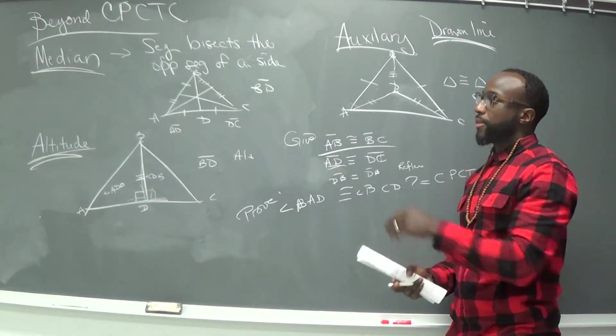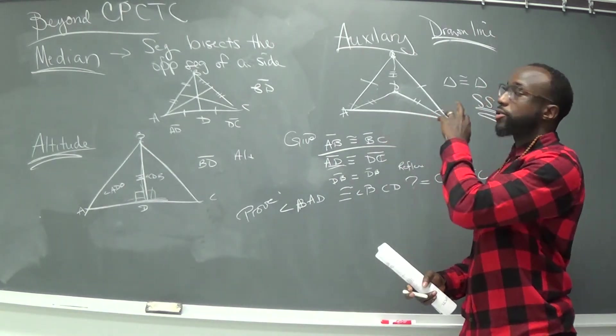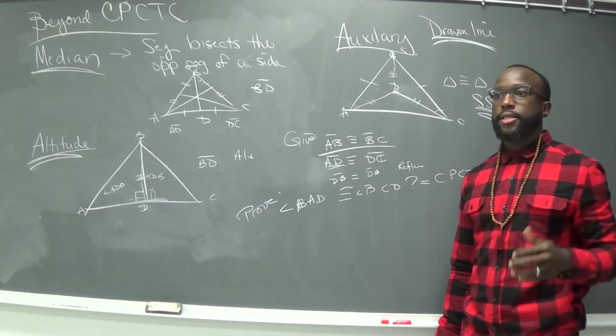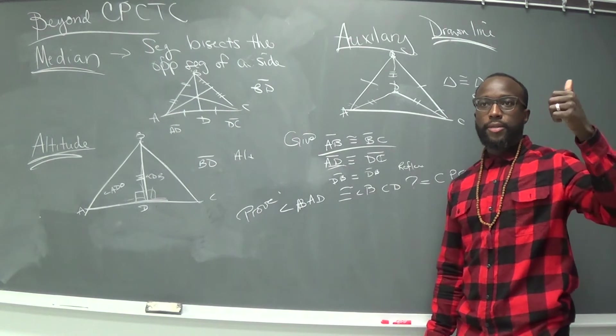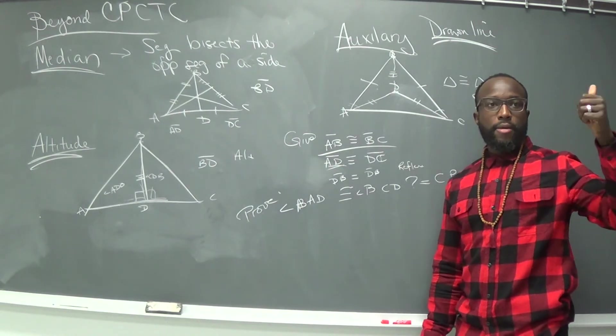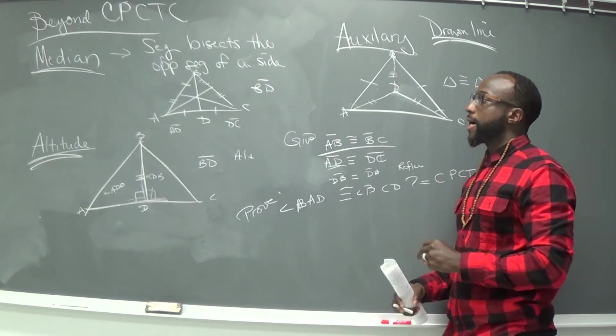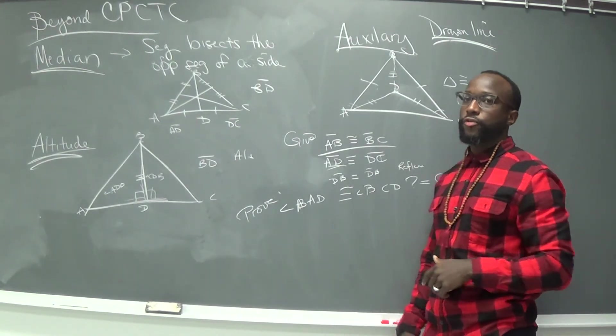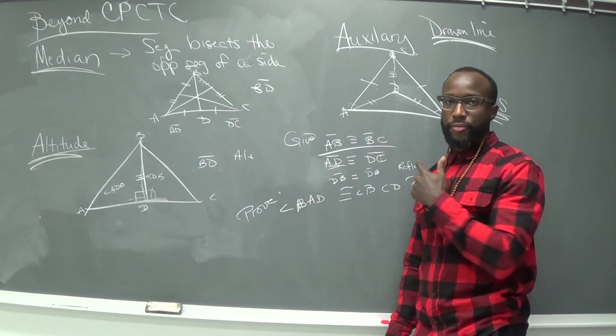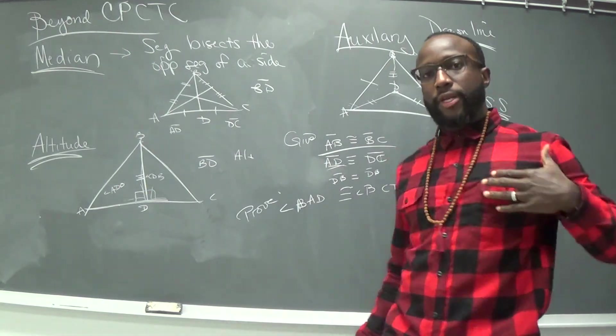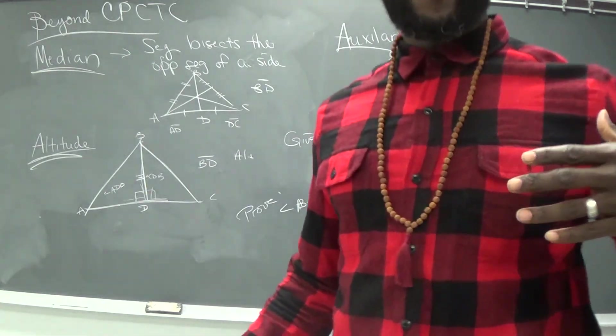So we've got our medians — they cut segments in half coming from the vertex. We have our altitude, which creates a perpendicular line from the vertex. And then we have our auxiliary line, which is the line that we draw ourselves. You can't prove CPCTC until you prove that a triangle is congruent. Now we're going to do a proof in a second, but from here we're going to end this video.